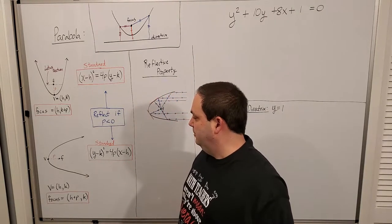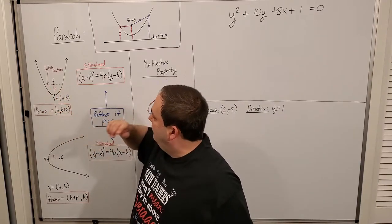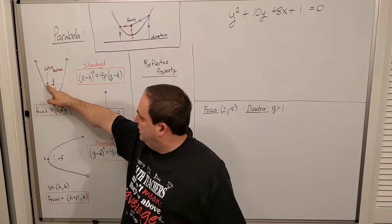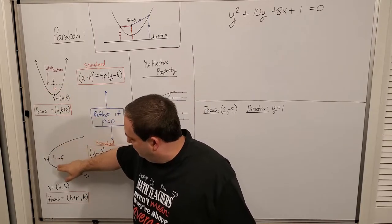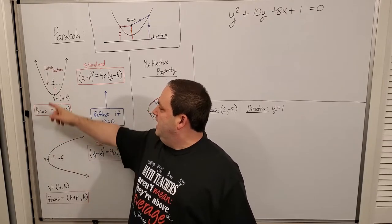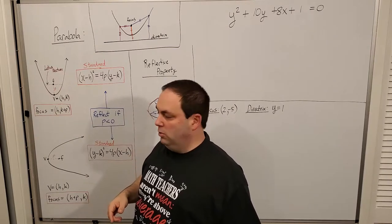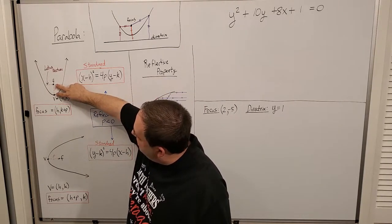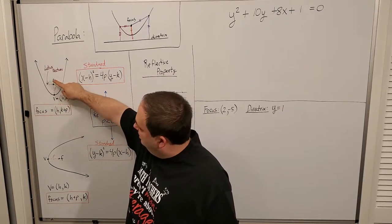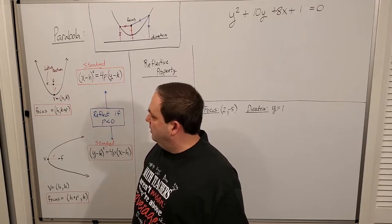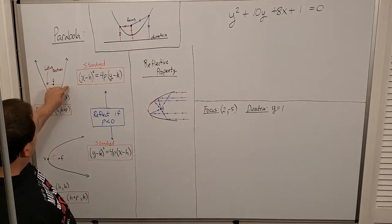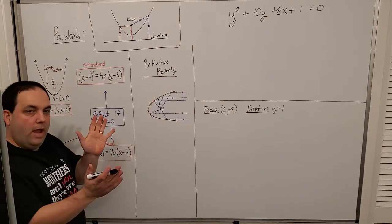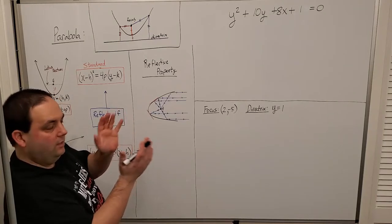There are two flavors: the vertical kind we study a lot with functions, and the horizontal kind. In this unit we'll start building up more horizontal-type graphs. You have what's called the latus rectum, which is the line that goes through the focus and hits either side of the parabola. The latus rectum is a length of four times what we call the focal length p — the distance from the focus to the vertex of the parabola.